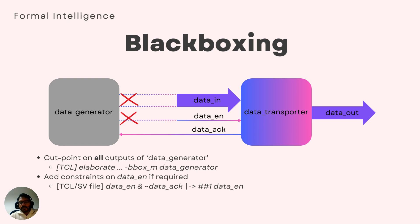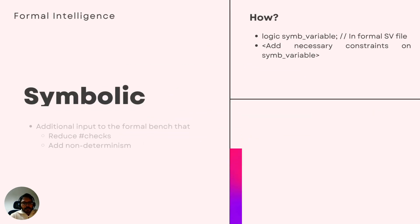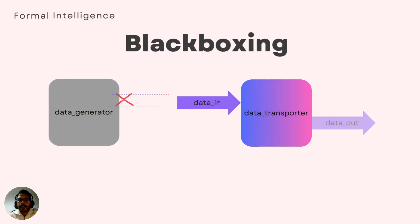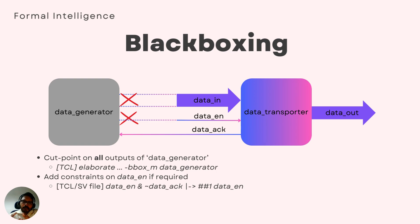For example, you can say that data_enable should stay asserted until data_ack is received — it can be coded as shown in the next slide. The drawback of cut pointing and black boxing is that if you don't add relevant constraints like the one we just saw for data_enable, you'll end up debugging many false failures until you come up with the necessary constraints for the signals that are now undriven because of either cut pointing or black boxing.